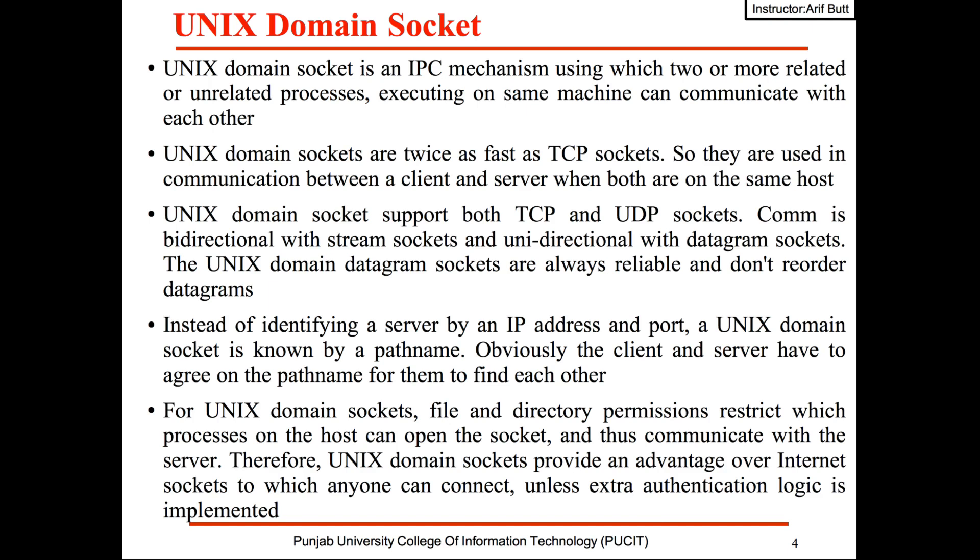Unix domain sockets support both TCP as well as UDP sockets. Communication is bi-directional with stream sockets and unidirectional with datagram sockets, and Unix domain datagram sockets are always reliable and don't reorder the datagrams.